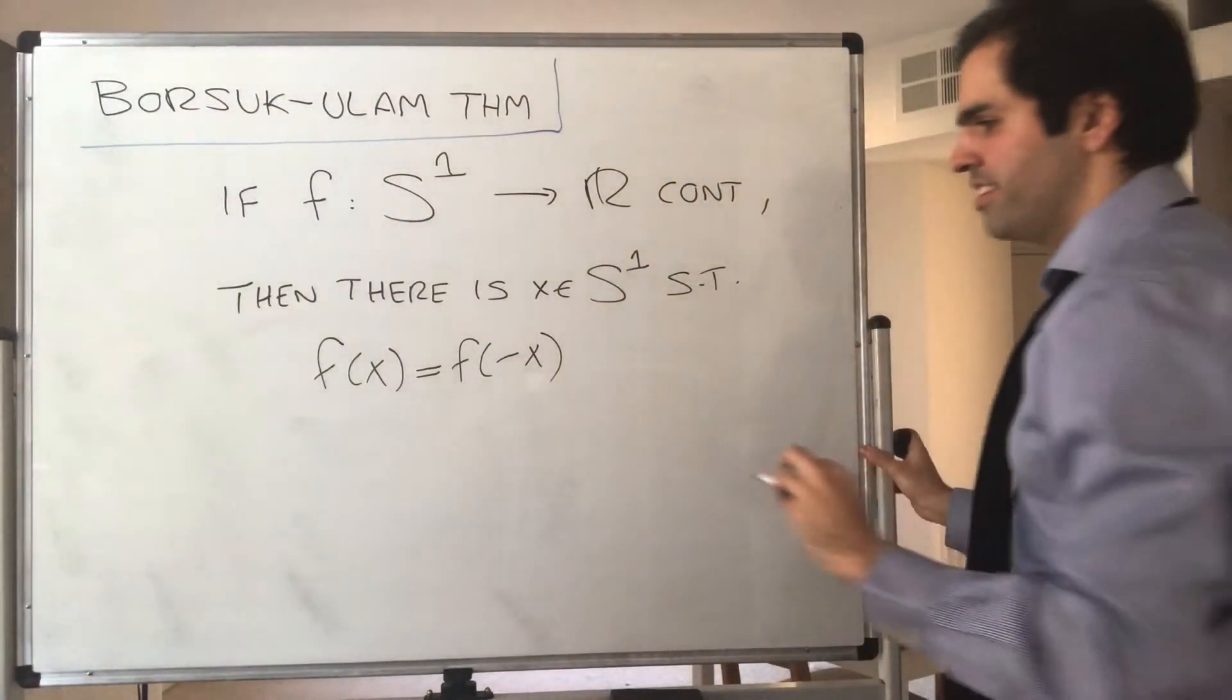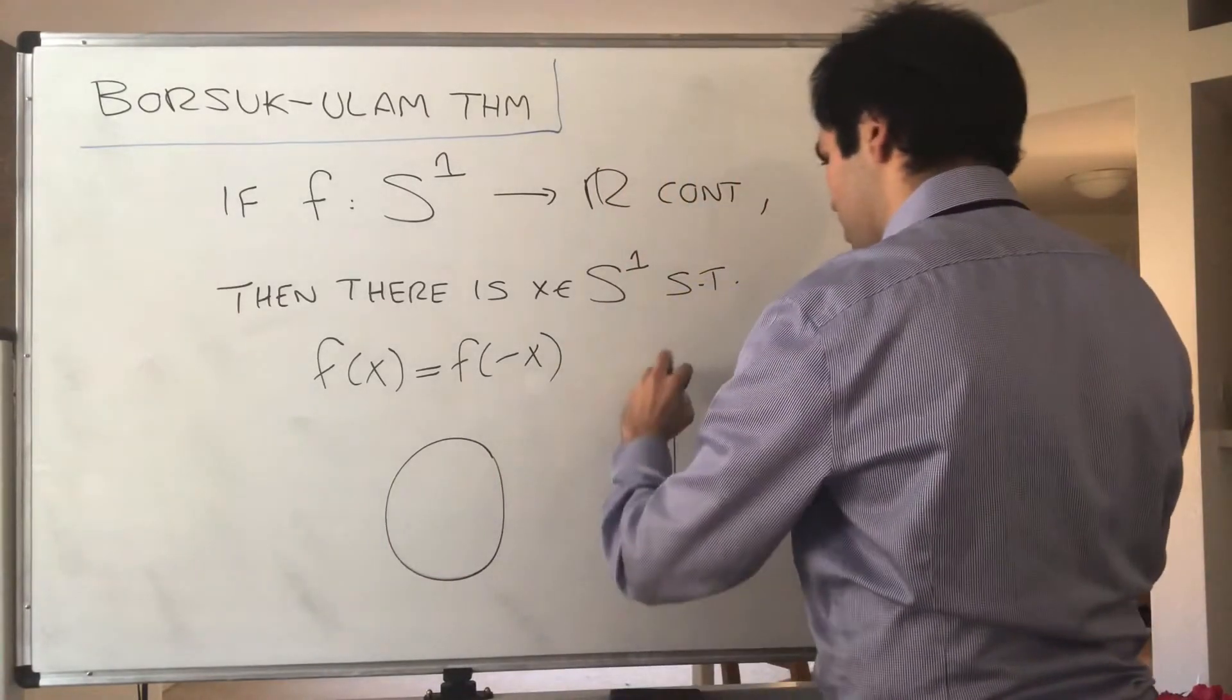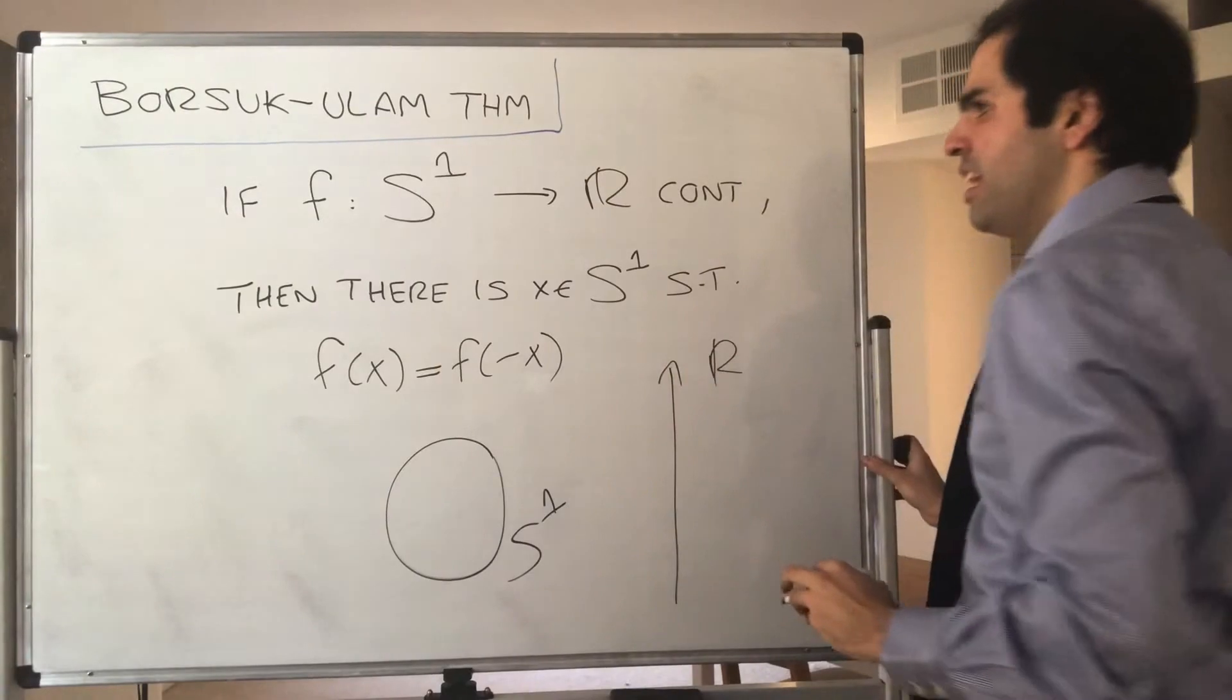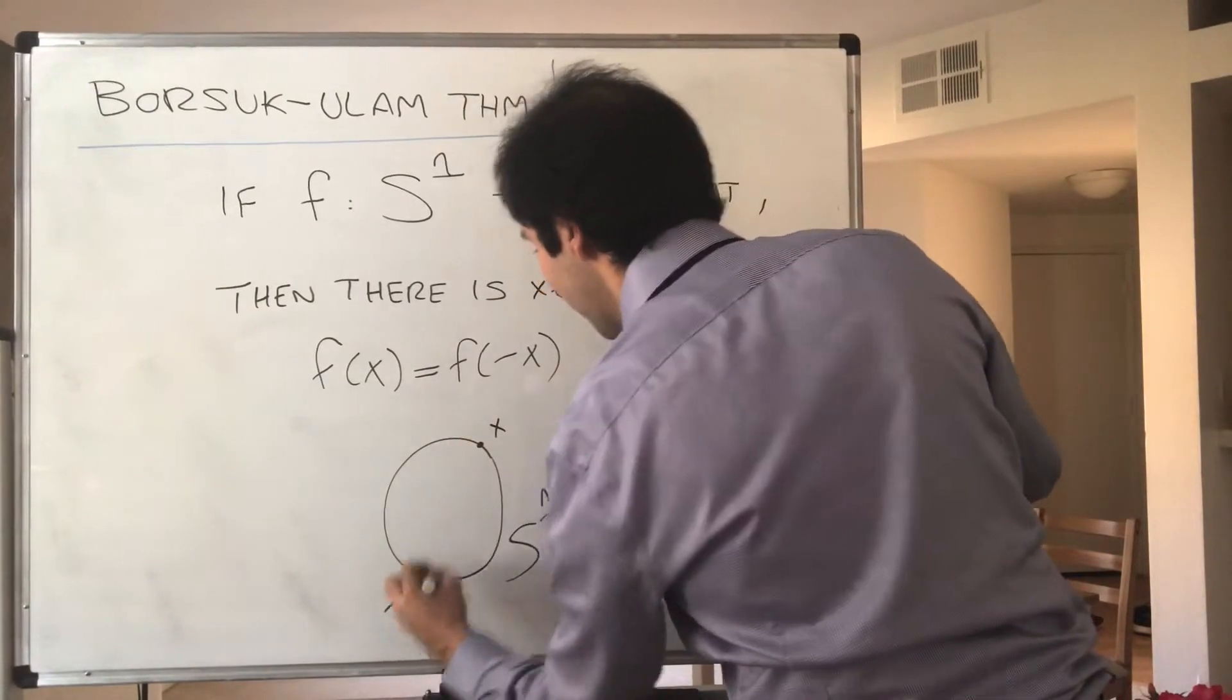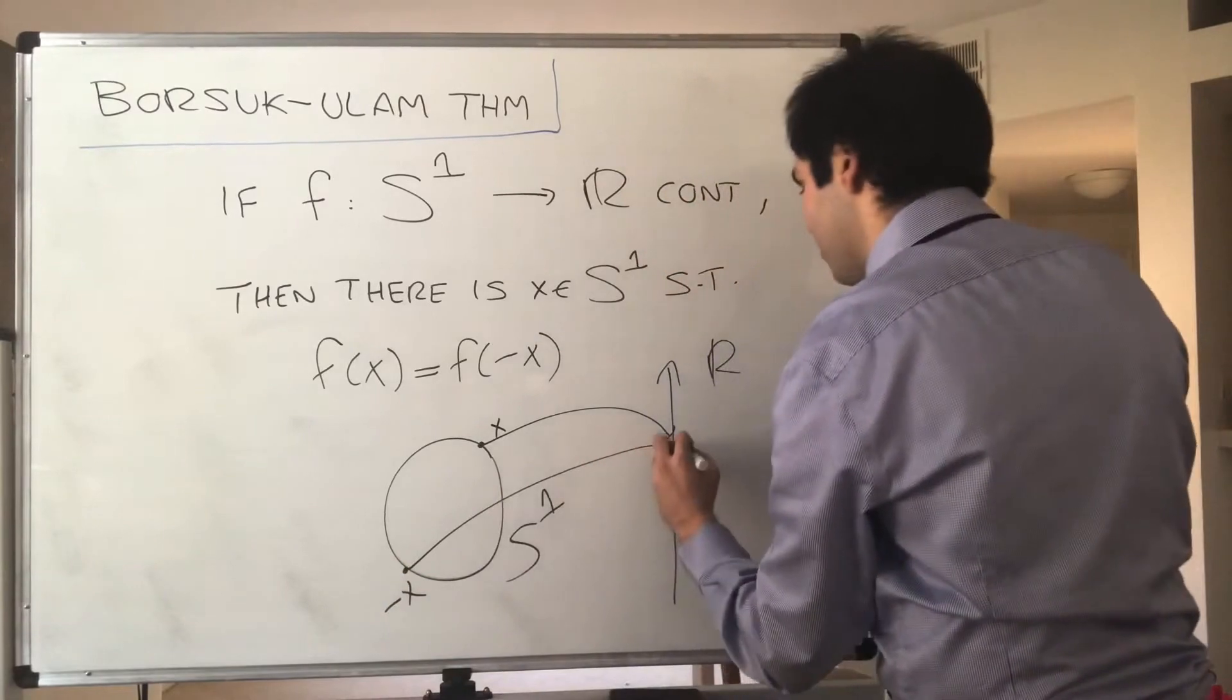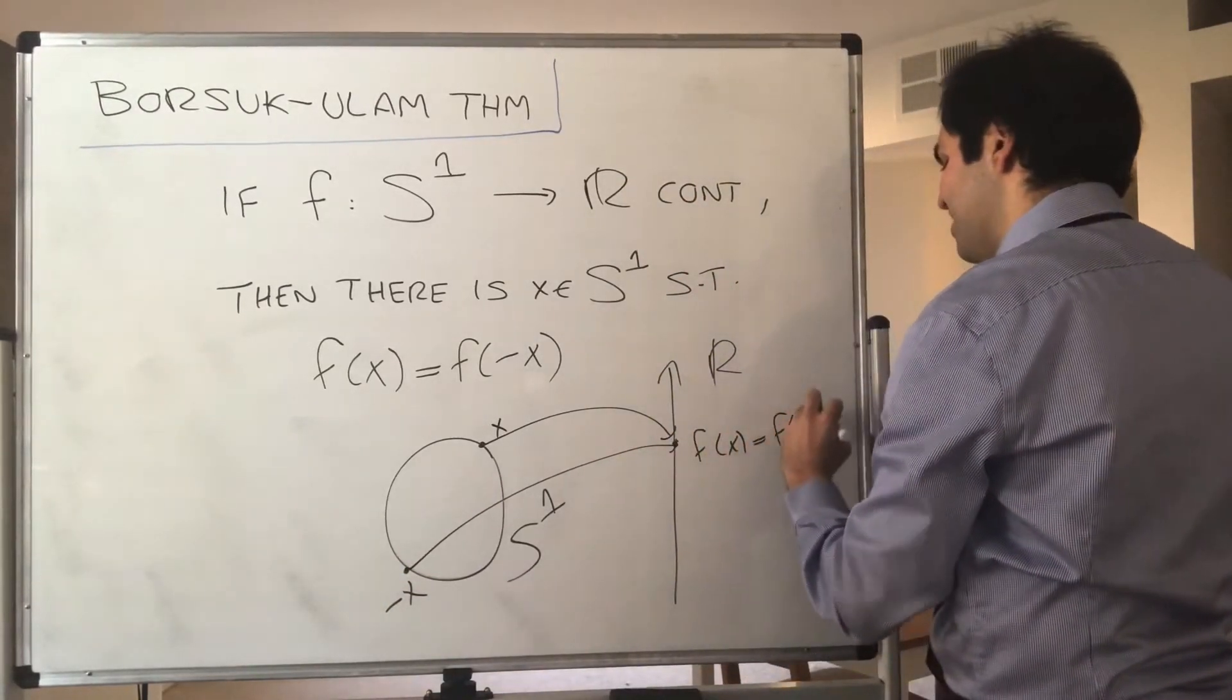So again, all it says is that if you have the circle in R², so S¹, and this is R, then if a function is continuous, then there are two antipodal points, x and minus x, that have the same value of f. So such that f(x) equals f(-x).